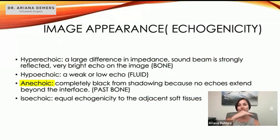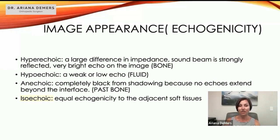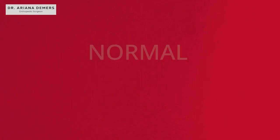When you see bright white, that's bone, and the black shadow behind it is anechoic. Isoechoic means equal echogenicity to adjacent soft tissues, just as in the other picture.